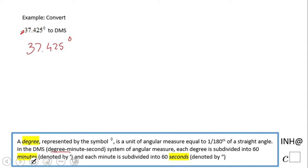DMS stands for degree-minutes-seconds. The conversion is 60 minutes in each degree, so 1 degree equals 60 minutes.